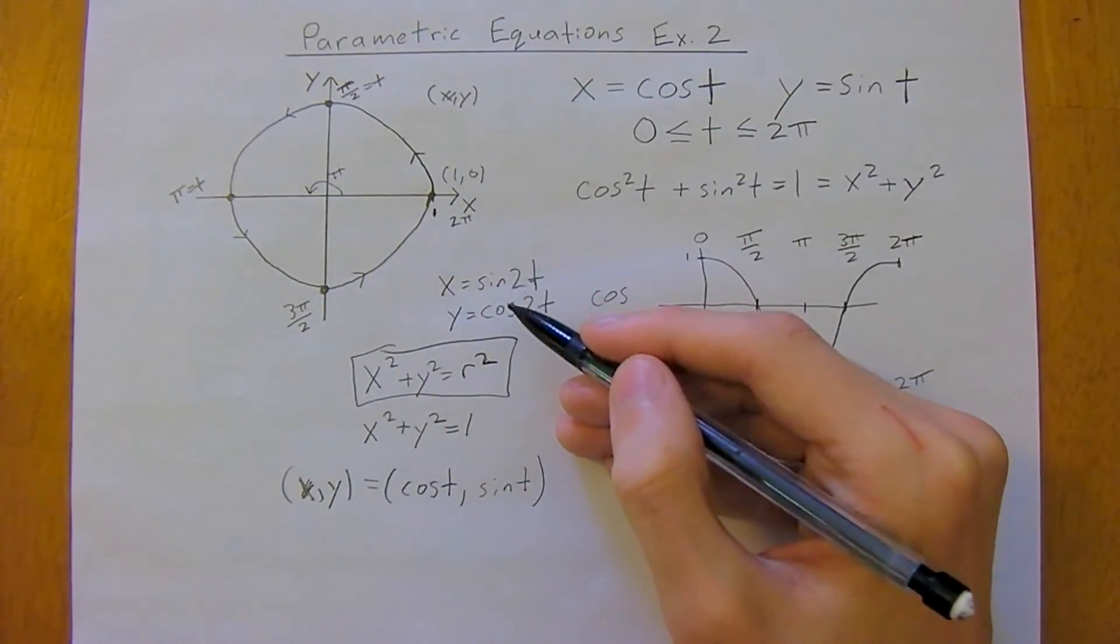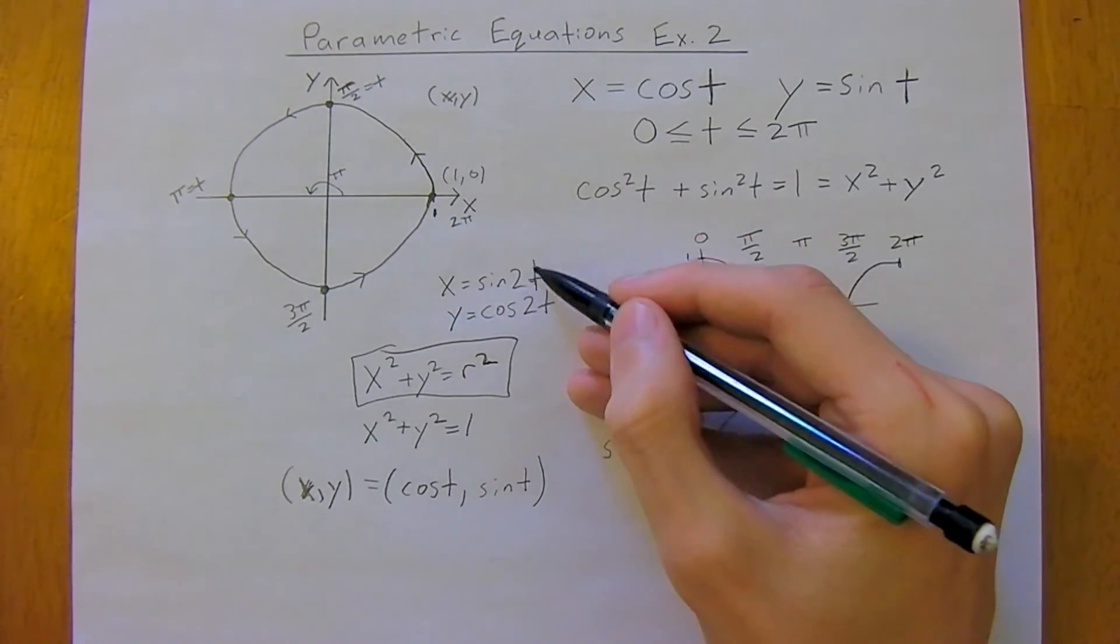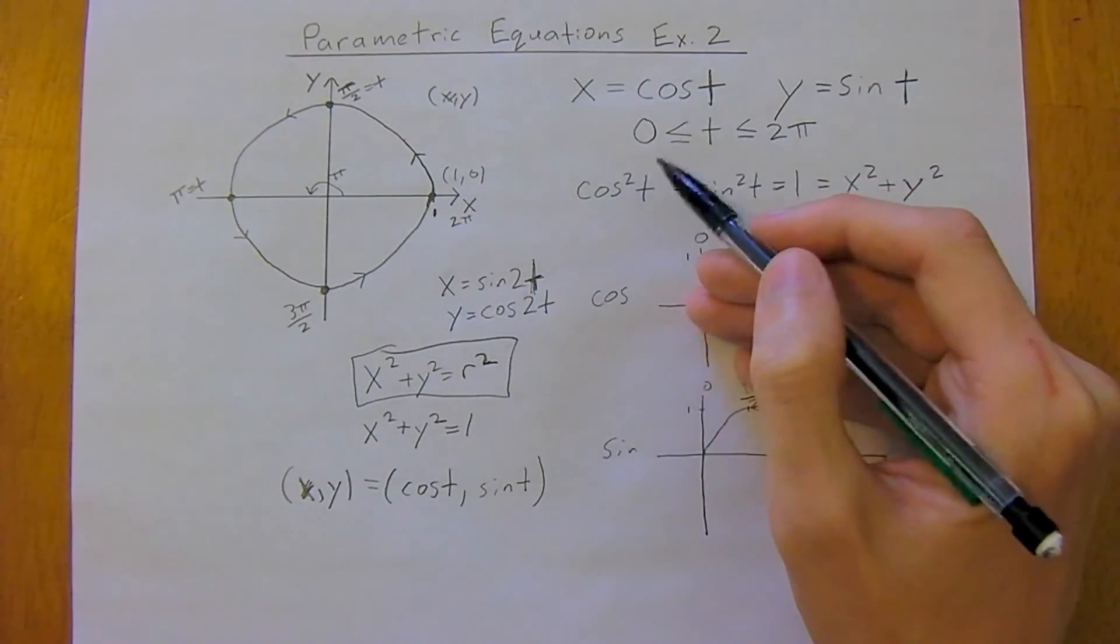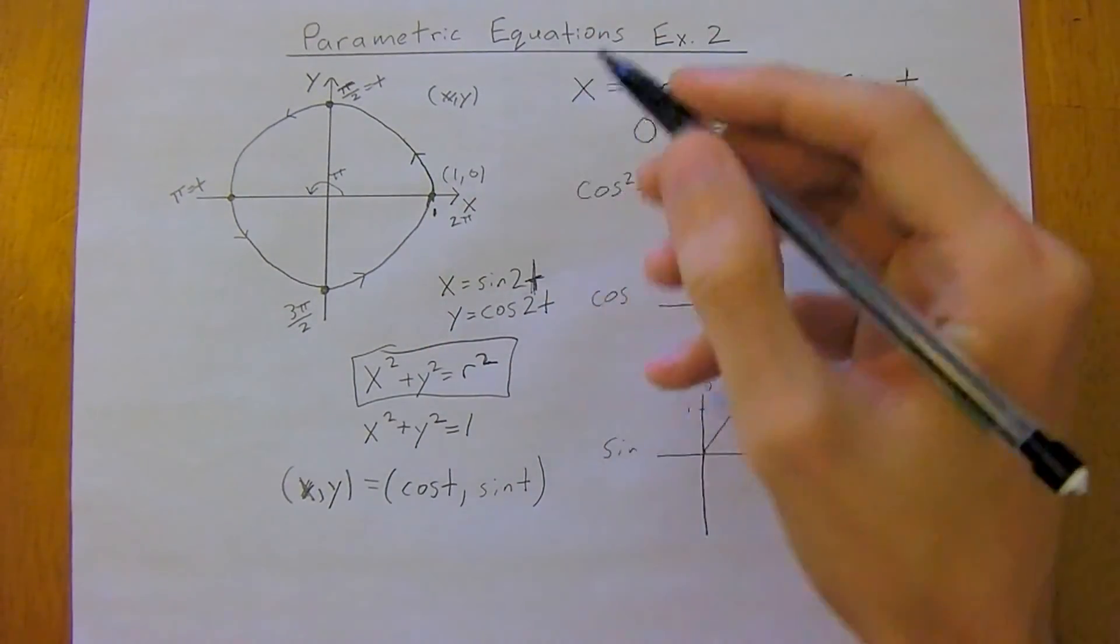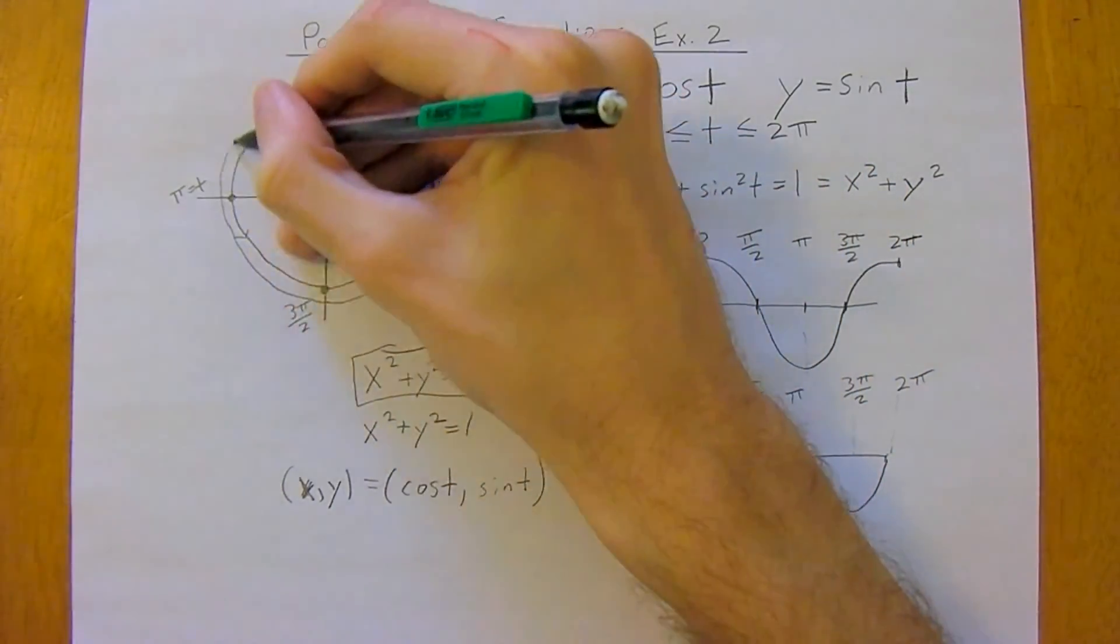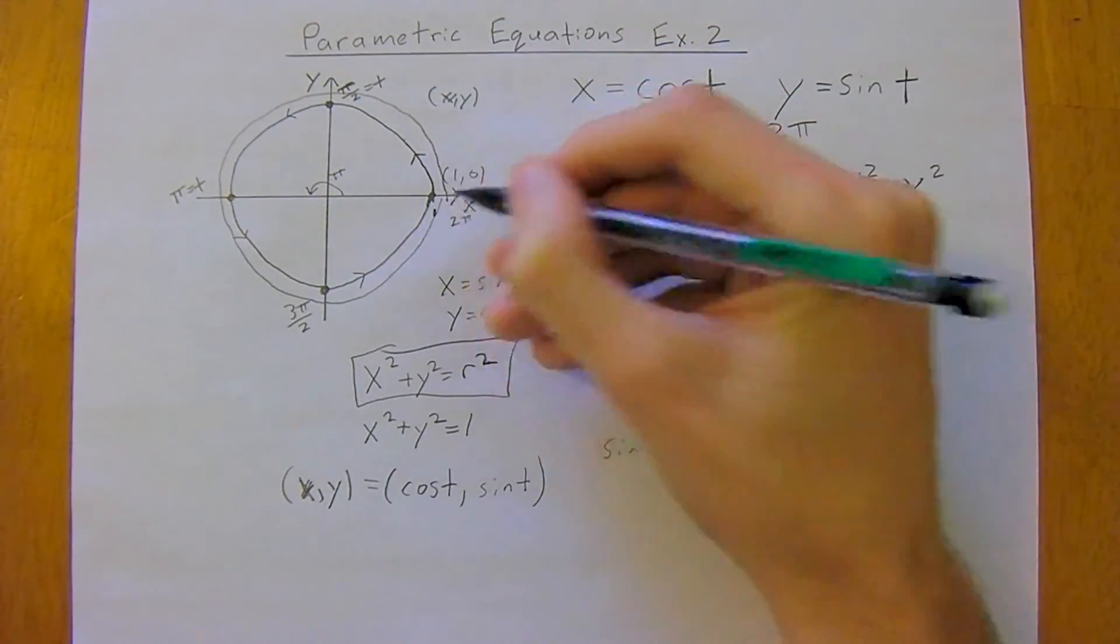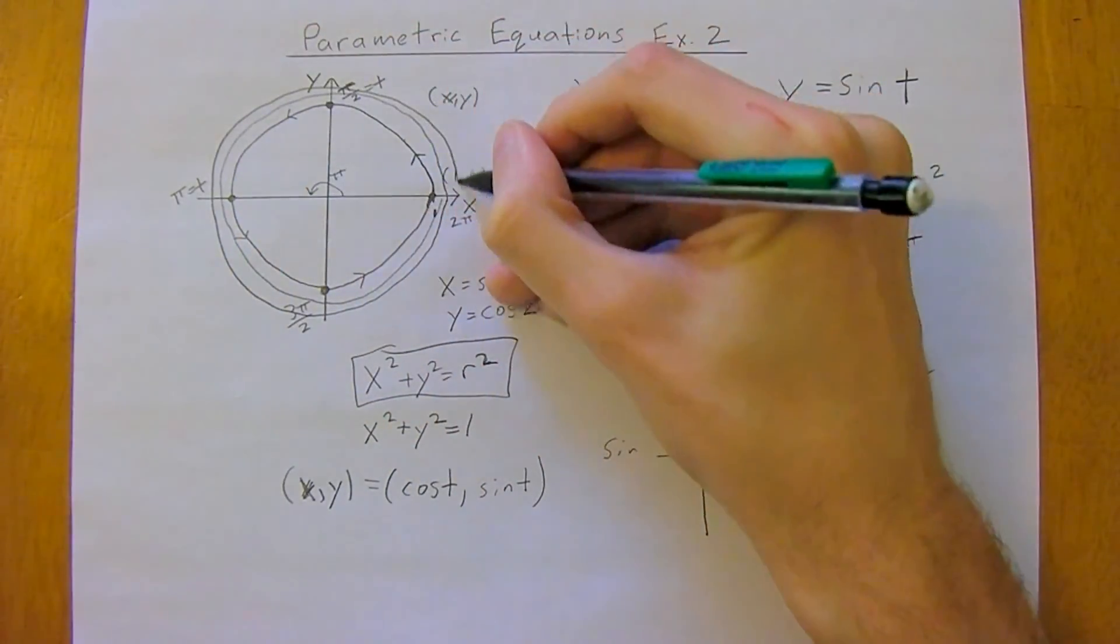And additionally, this 2 here, how that's going to affect it, is instead of just going once around the circle, in the time from 0 to 2 pi, it's now going to go twice around. So in this case, you would start here, and it would loop around in the clockwise direction, and that's because we've switched the sine and the cosine. And then, because we multiplied t by 2, it'll actually go around twice in that time.